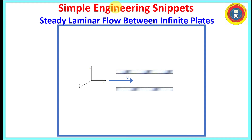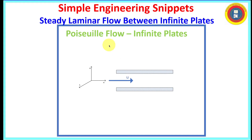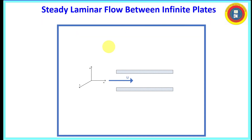Welcome to another Simple Engineering Snippet. In this instructional video, we will be deriving an analytical solution for steady laminar flow between infinite plates. This is often referred to as Poiseuille flow, although the classical Hagen-Poiseuille flow is a steady laminar flow through a circular cylinder. Let's get started.